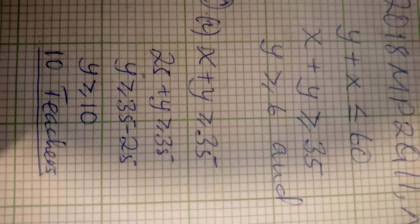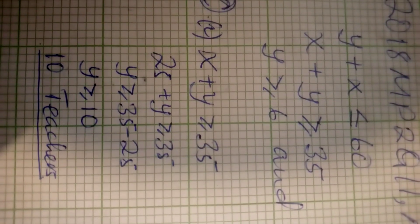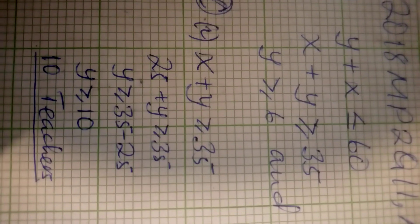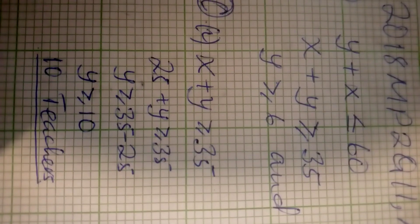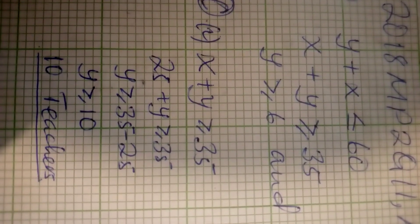On a trip, there must be 35 people. And this is the equation we came up with: x plus y greater than or equal to 35.